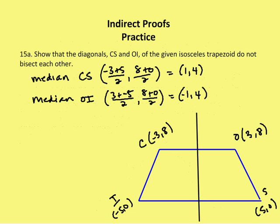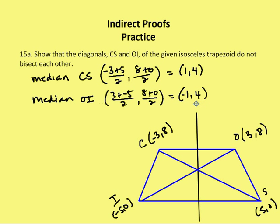We're going to move on to the next problem, which has several parts that all reflect back on a particular trapezoid that's drawn. The question: show that the diagonals CS and OI of the given isosceles trapezoid do not bisect each other. We draw the two diagonals CS and OI. To check if they bisect each other, we find their midpoints. The midpoint of CS is (1, 4), and the midpoint of OI is (-1, 4). Since the midpoints differ, the diagonals do not bisect each other.